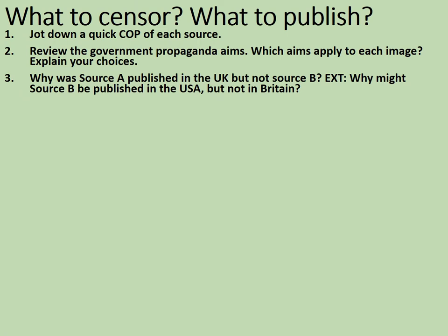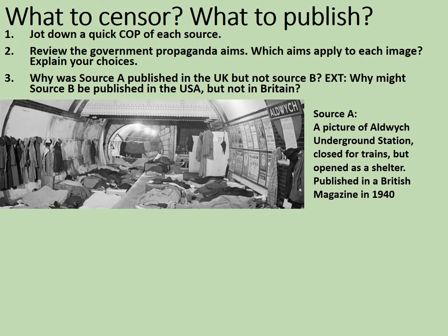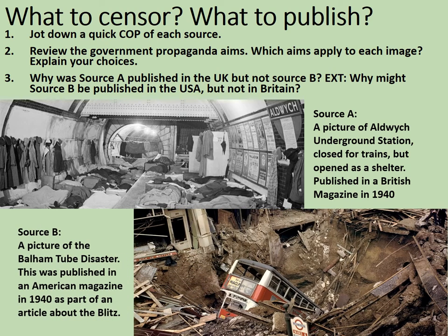Once you've completed the other tasks, it's time to look at the decision to censor certain information and not others. Jot down a quick content, own knowledge, and purpose for each of these sources. Source A: a picture of Aldwych Underground Station, closed for trains but opened as a shelter — published in a British magazine in 1940, during the height of the Blitz. Source B: a picture of the Balham Tube disaster, published in an American magazine in 1940 as part of an article about the Blitz. Review the government propaganda aims from earlier in the lesson. Which aims apply to each image? Explain your choices. Why was Source A published in the UK but not Source B? As an extension: why might Source B have been published in the USA but not in Britain?